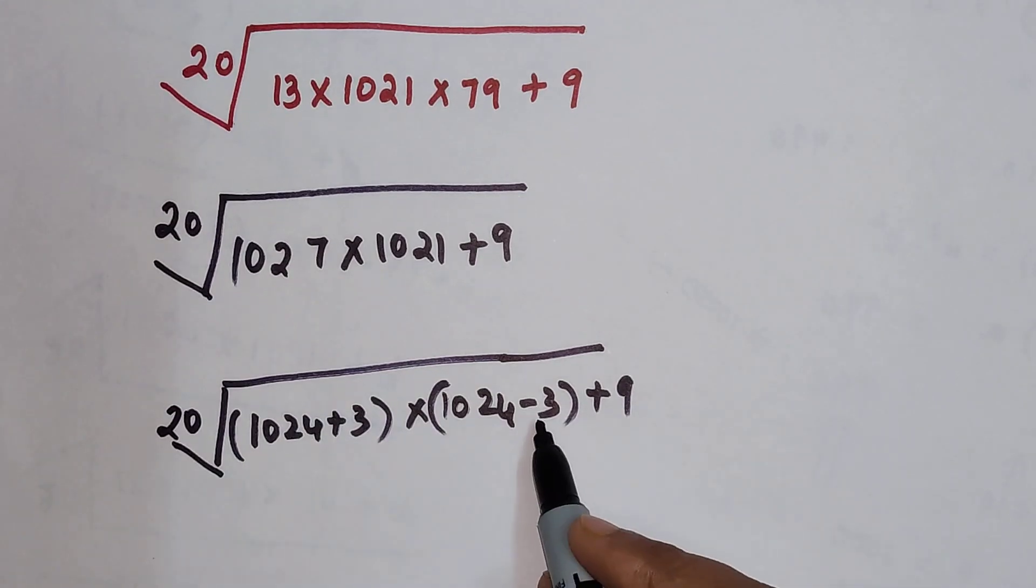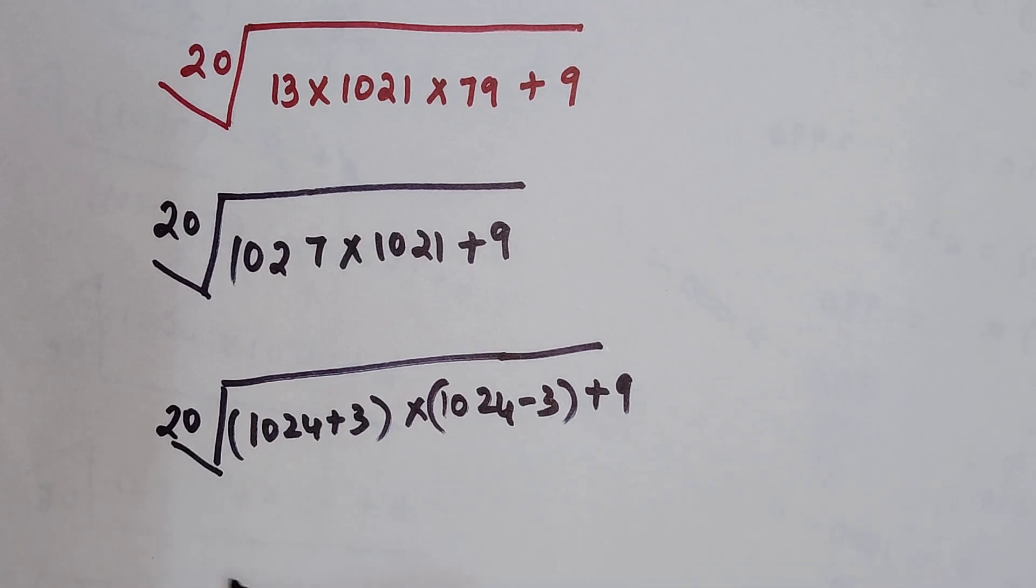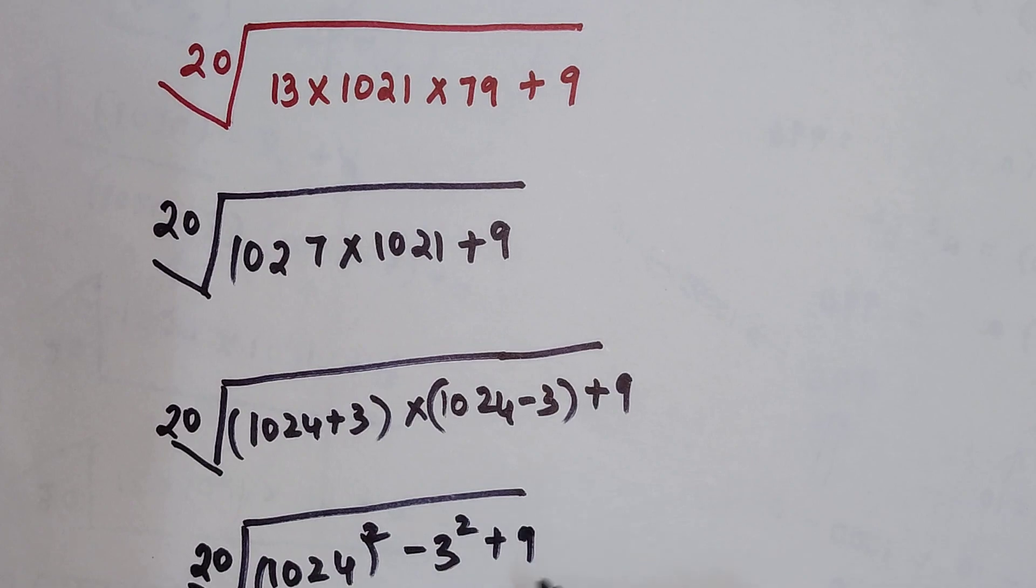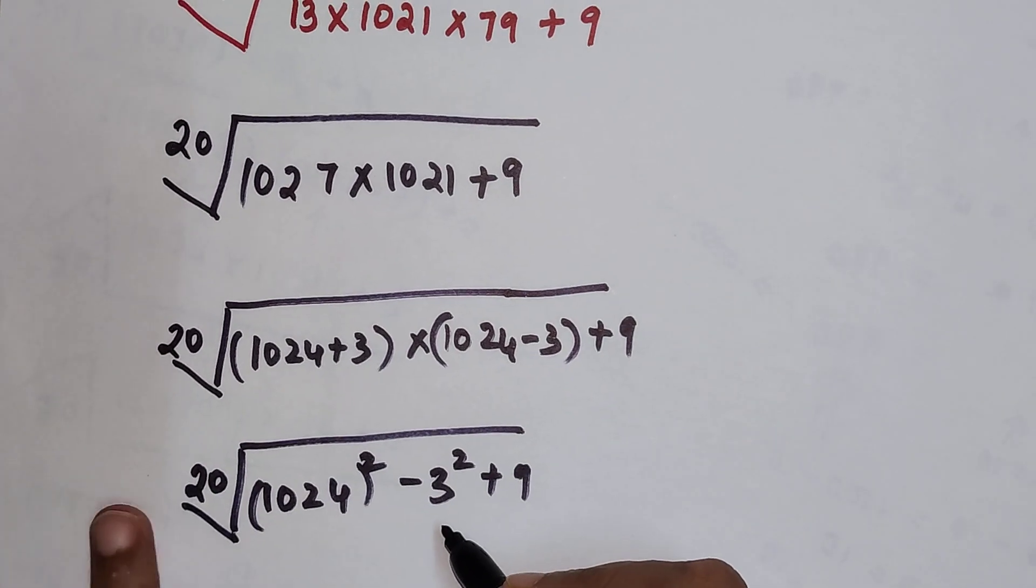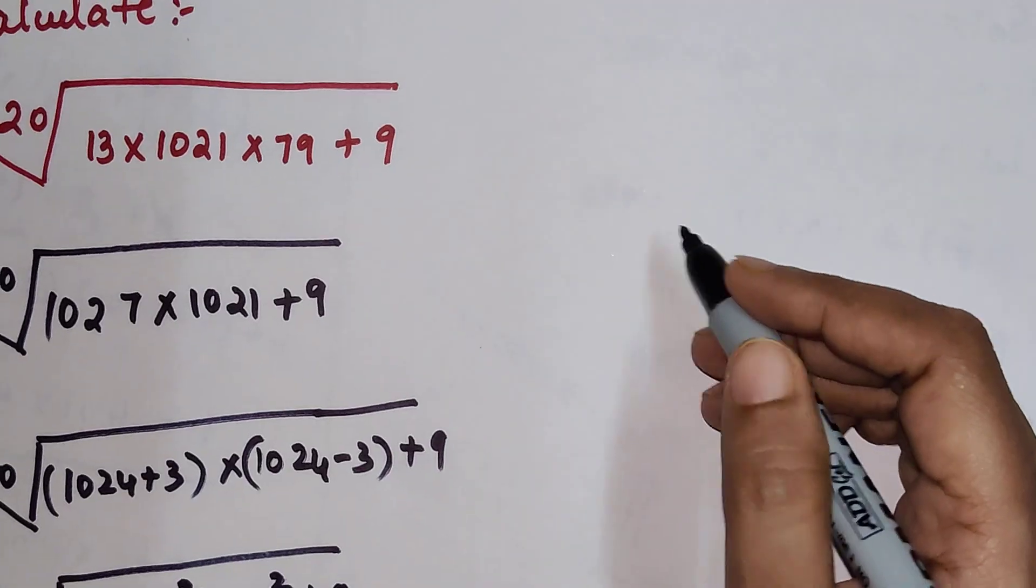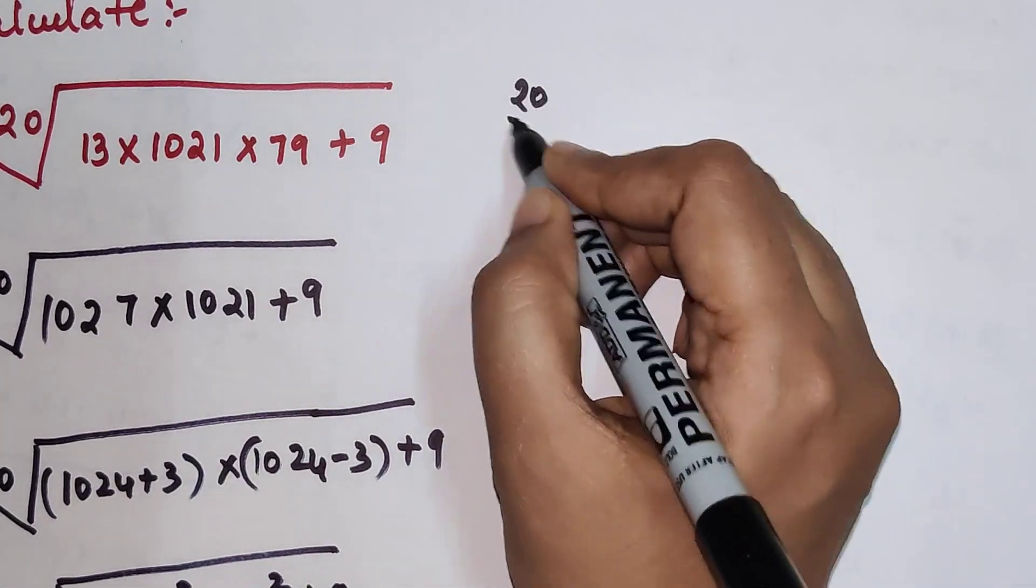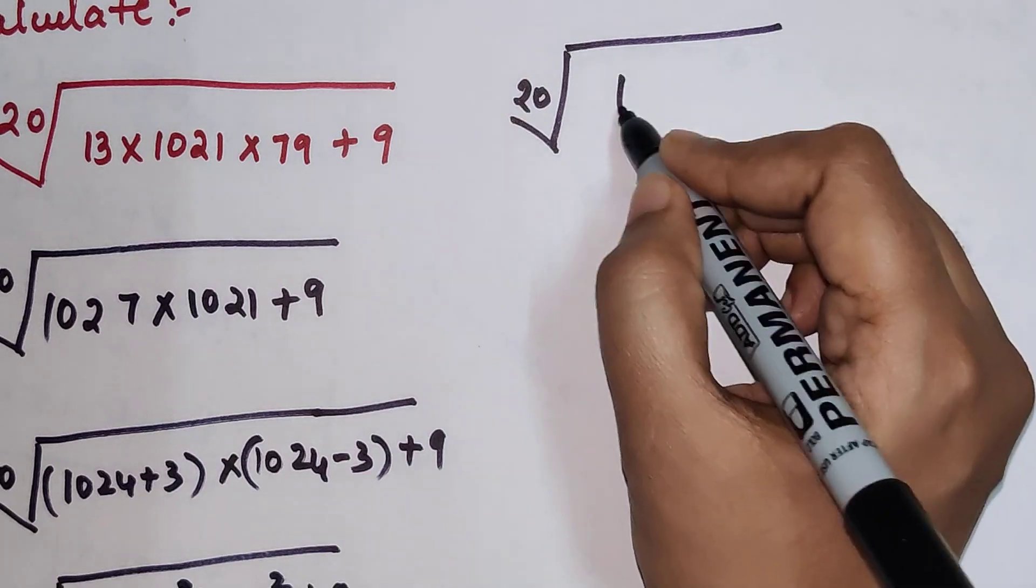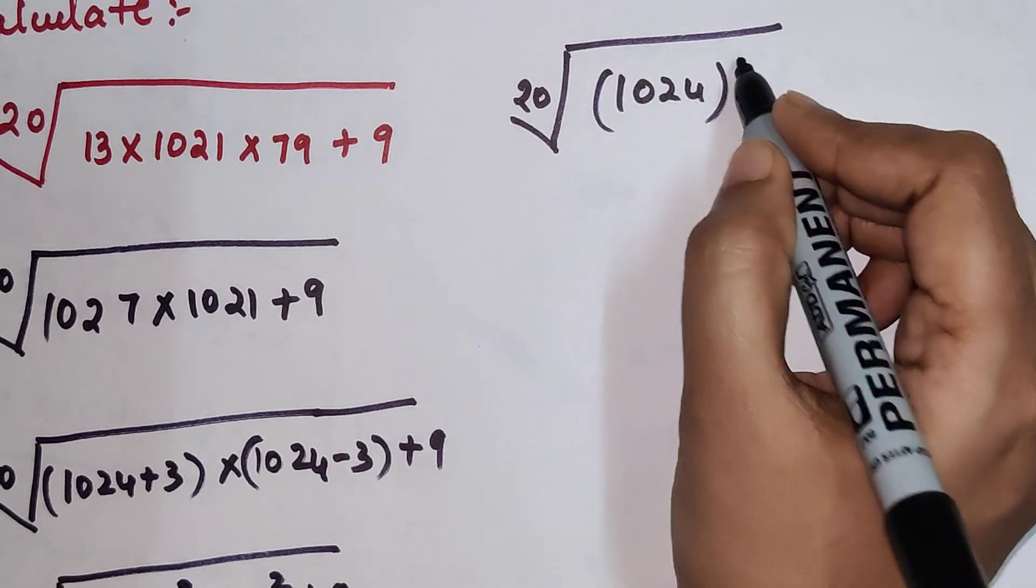Now this is (a+b) and (a-b). When multiplied with each other we get a² - b². So I am left with 1024² - 3² + 9. Now 3² is 9, so -9 + 9 gets cancelled. So I am now left with the 20th root of 1024².